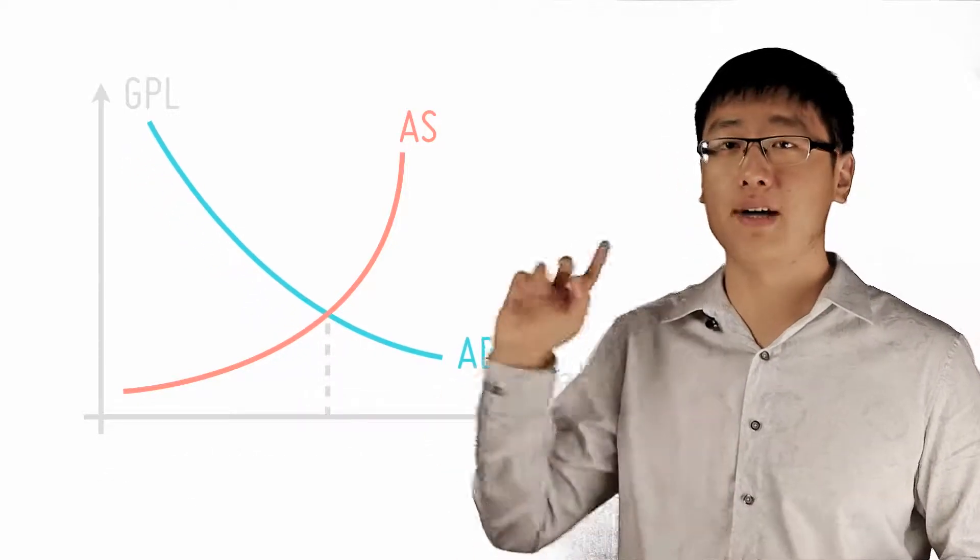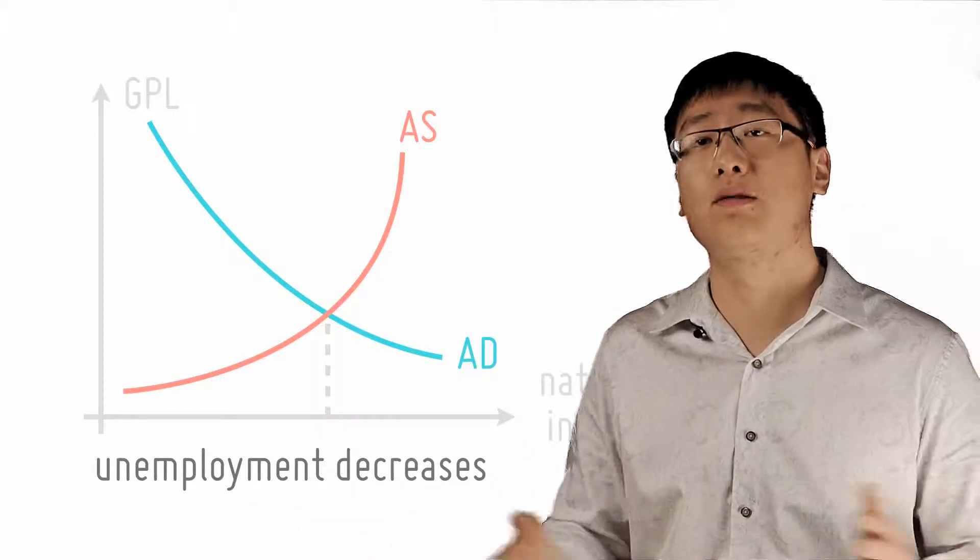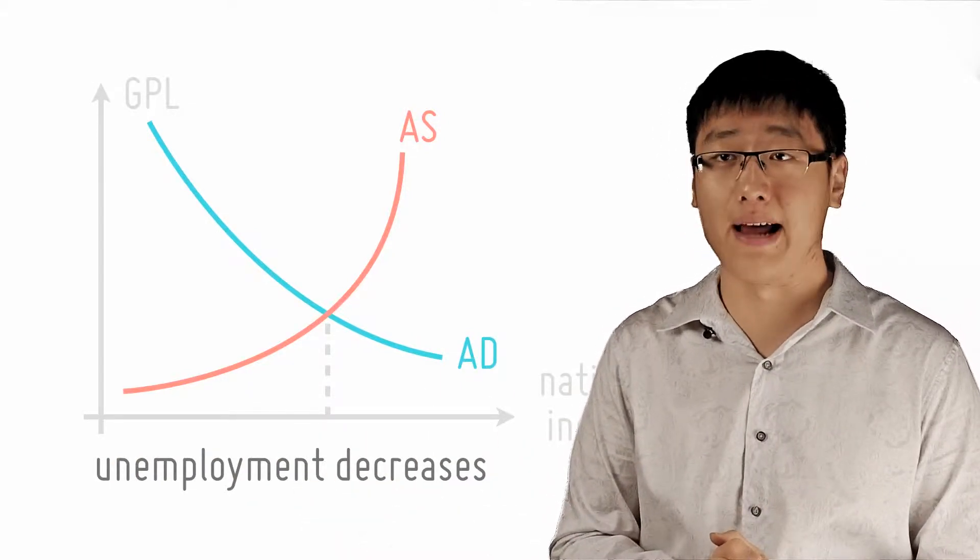Similarly, if interest rate goes down, AD goes up, national income goes up even more due to the multiplier effect, then unemployment decreases because more people will be required for production in the economy.